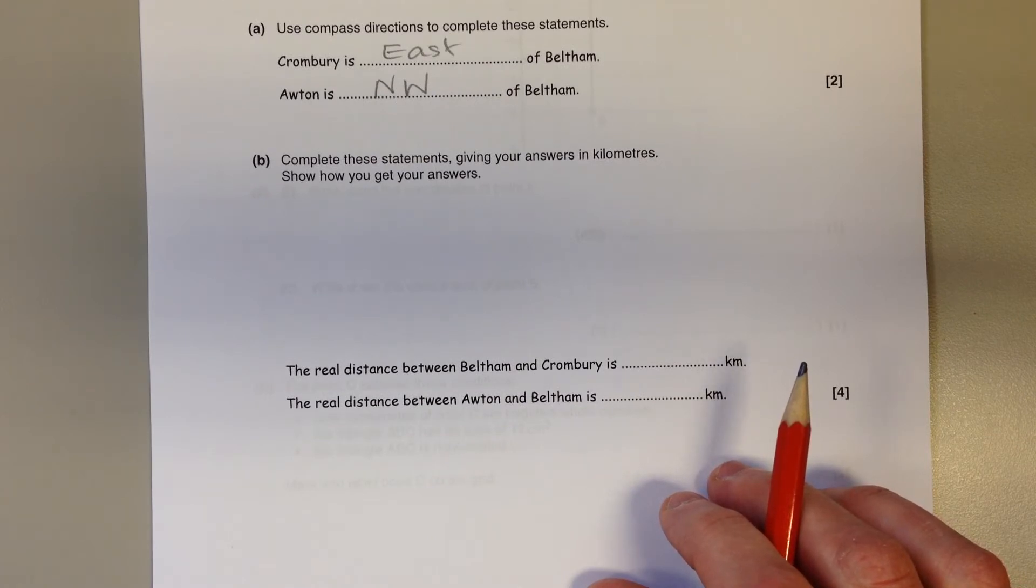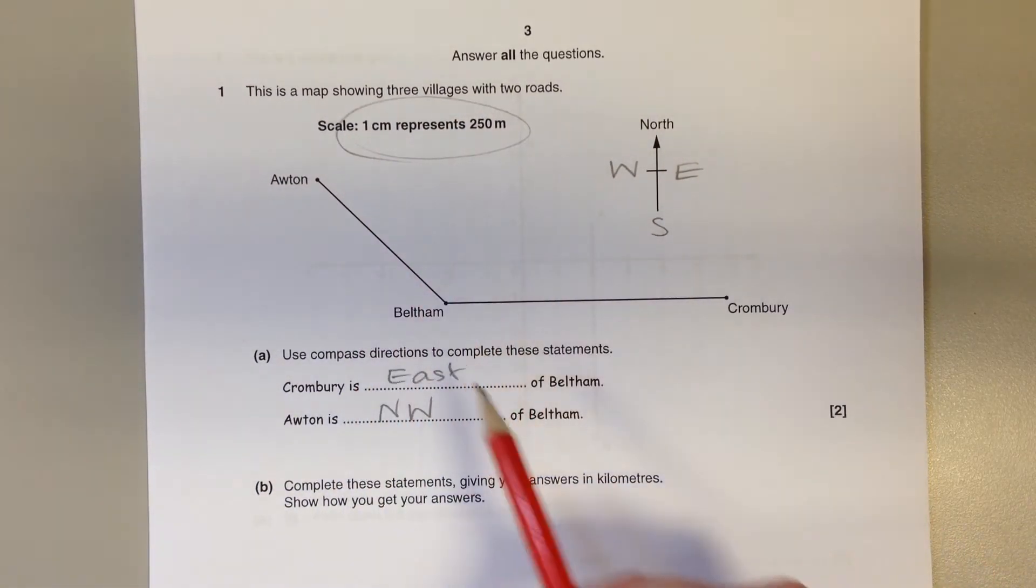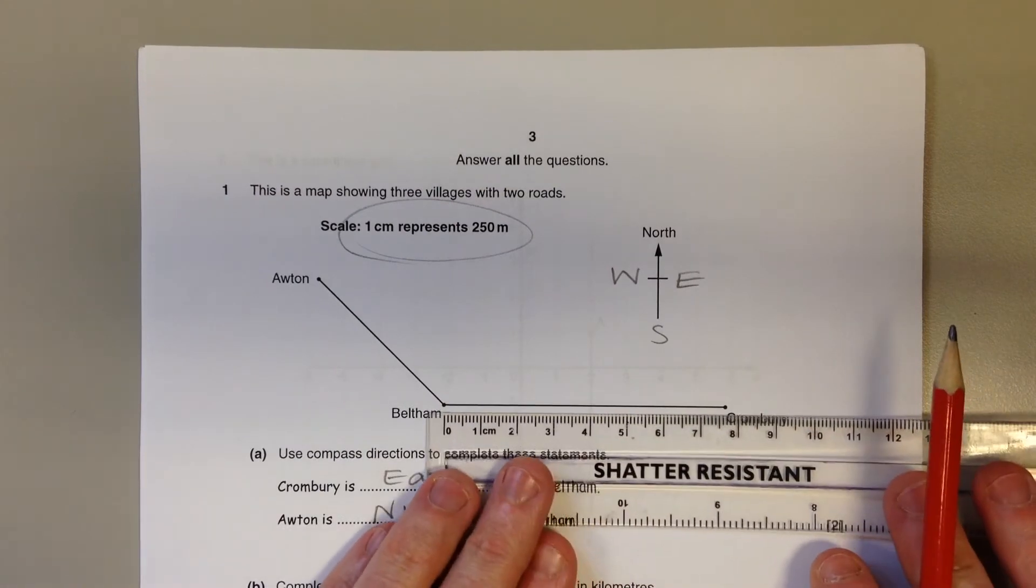Complete the statements, giving your answers in kilometers. It's about the distance between the places. The map scale tells you that every centimeter on the map represents 250 meters in real life. So we'll measure Beltham and Cronbury first, being as accurate as we can.